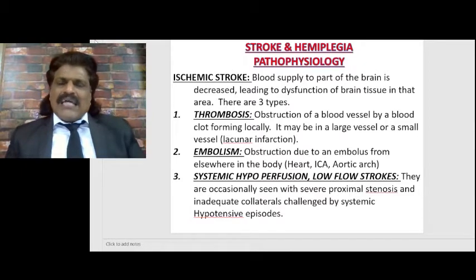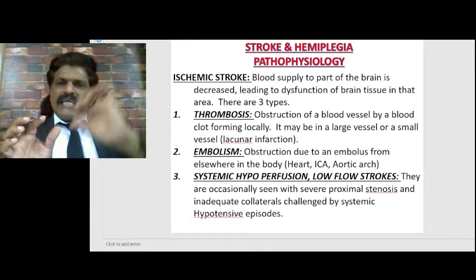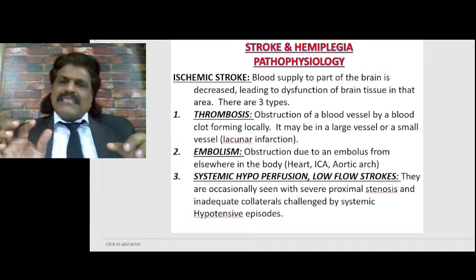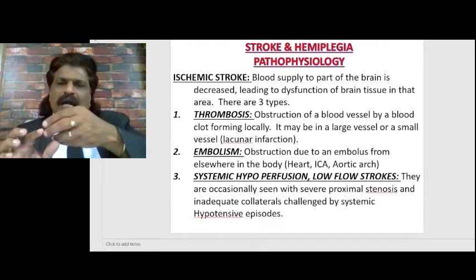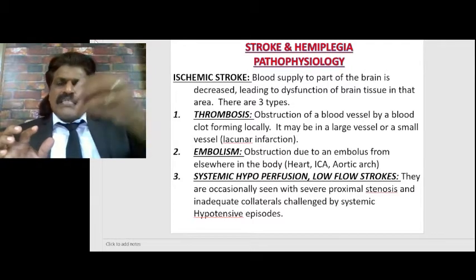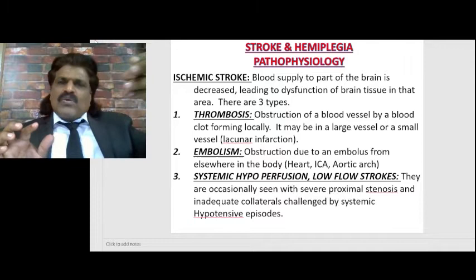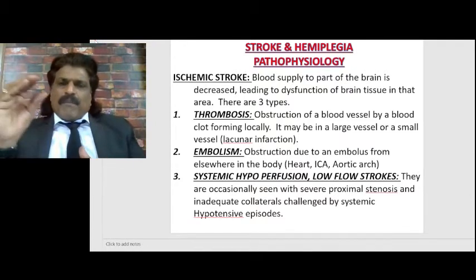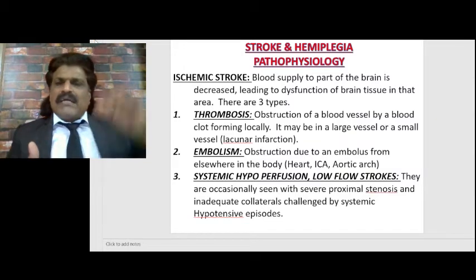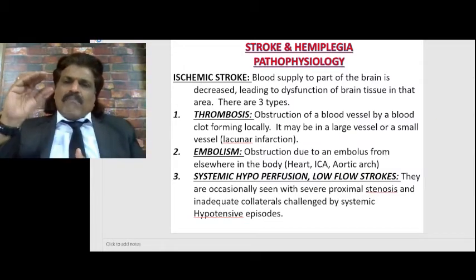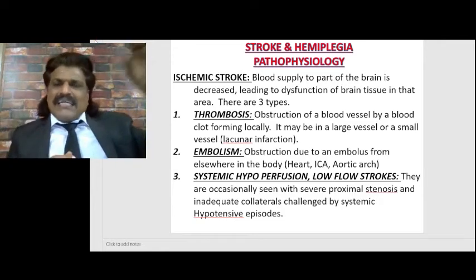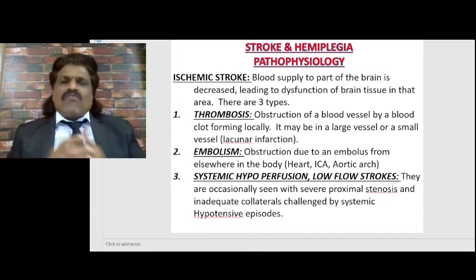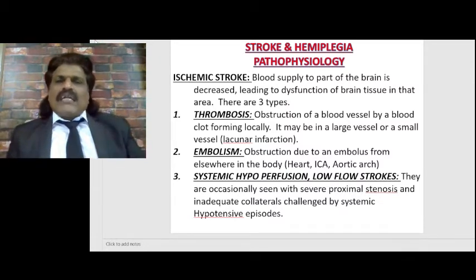We have principally three arteries: the anterior cerebral artery, the middle cerebral artery, and the posterior cerebral artery. With hypotensive episodes and systemic hypoperfusion, the proximal parts of the ACA, MCA, and PCA get good blood supply, but towards the distal end blood flow slows further. When blood supply between the ACA and MCA is decreased distally, we call that anterior watershed infarction; between the MCA and PCA, posterior watershed infarct.